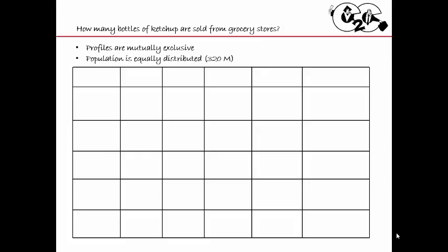Second assumption: the population is equally distributed at 320 million people — just standard, which will make the math much easier. So my columns will be: profile, the number of million people in that group, the percentage of those people that would buy ketchup from a grocery store, that total number, the number of annual purchases — because I need to know how many bottles, not just how many people — and then the total number per year.